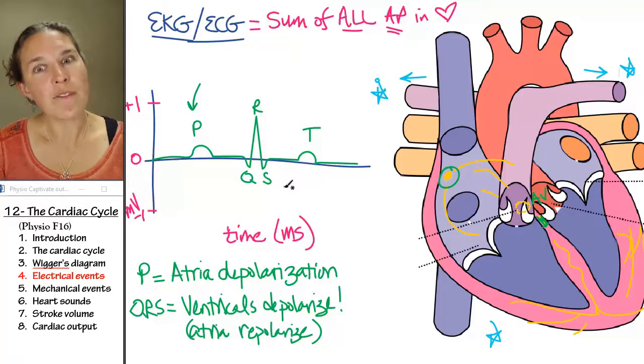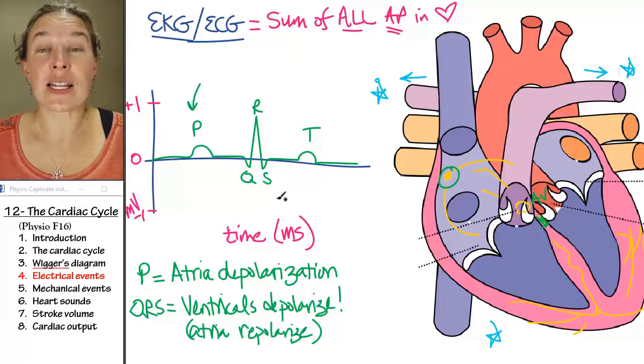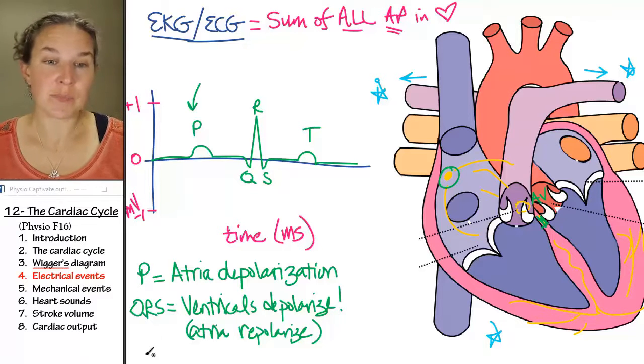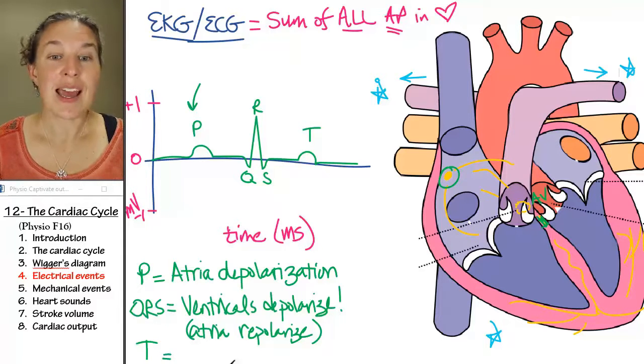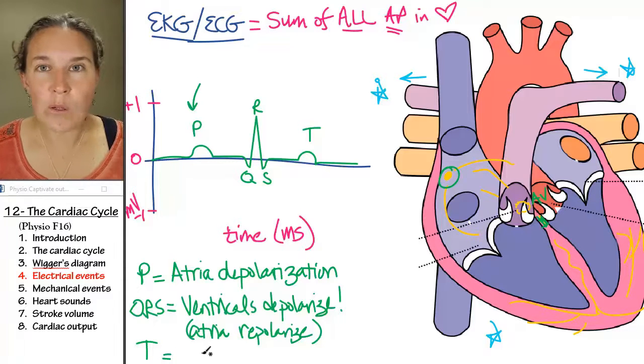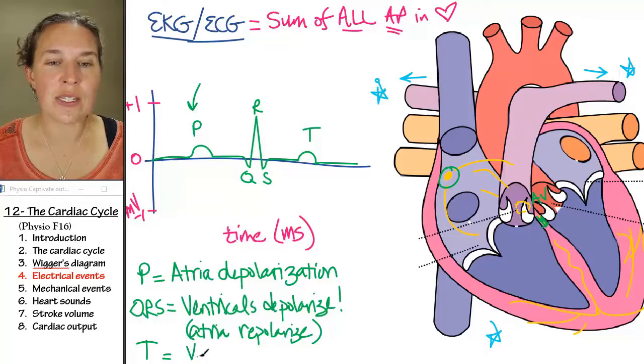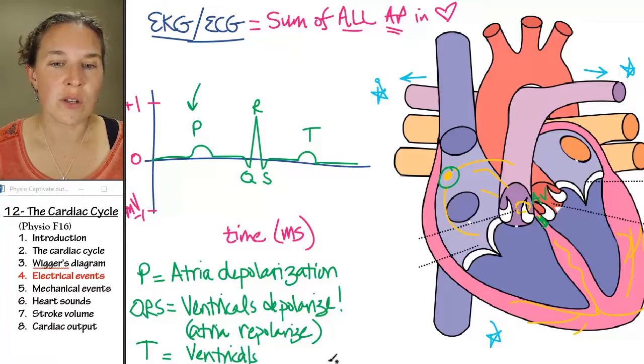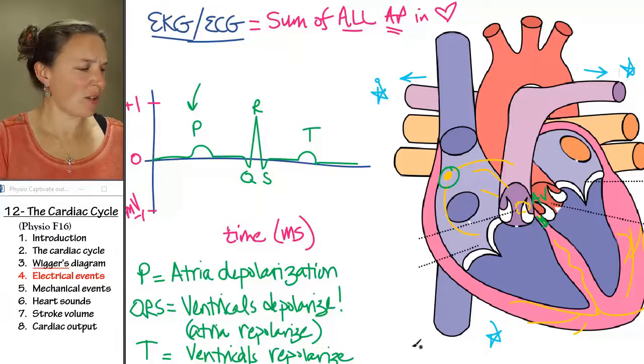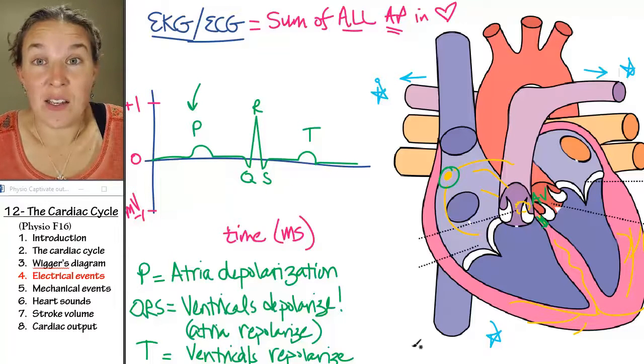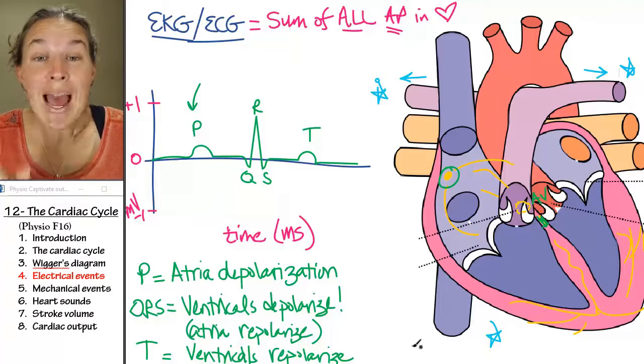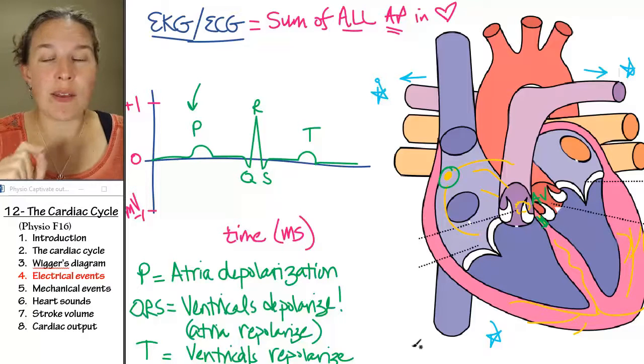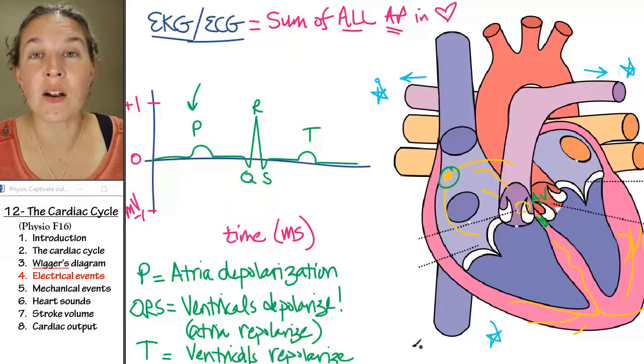But then, after, what's the last electrical activity you're going to expect to see? And guess where it happens? Yeah, we've got to repolarize our ventricles. So the T wave represents ventricles repolarize. Now, what did we just do? All we did was we mapped out and recorded the electrical activity that's going to coordinate our heartbeat.